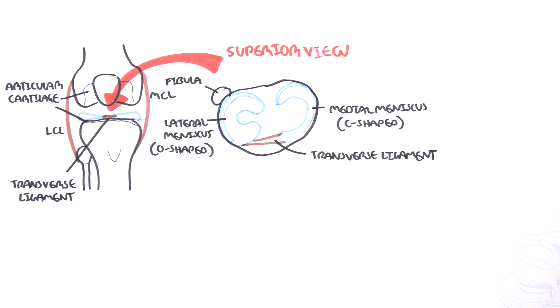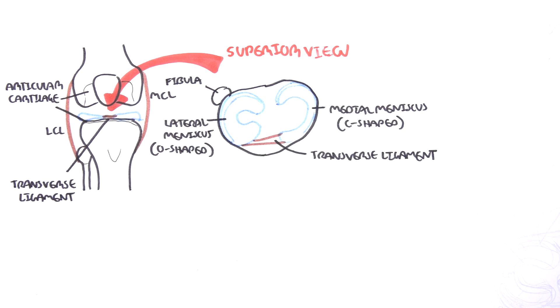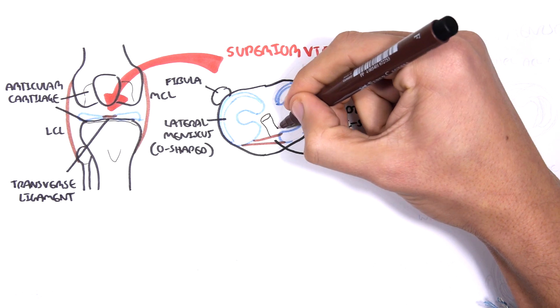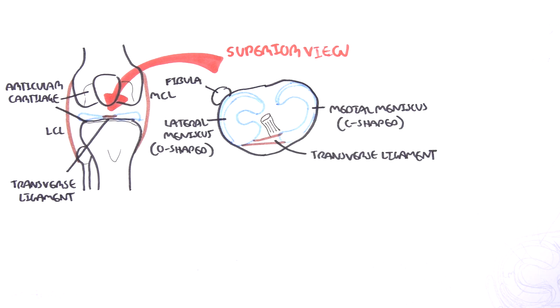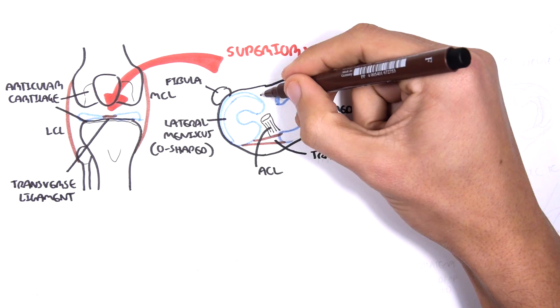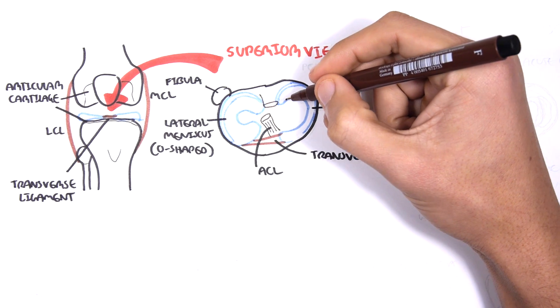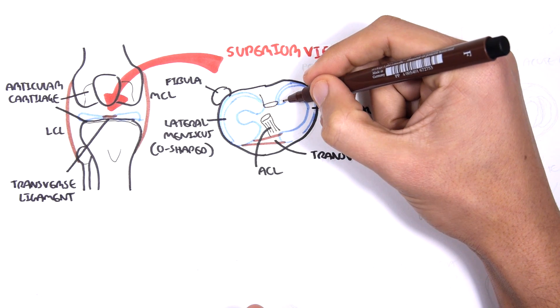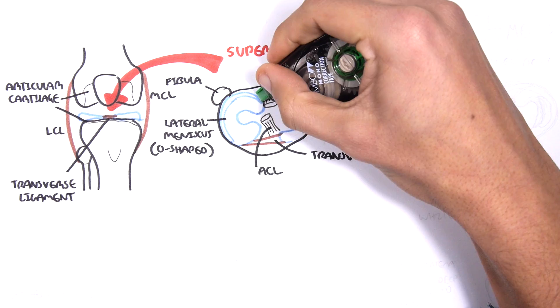There are two other important ligaments inside the knee joint that help stabilize the knee. They are named according to where they attach on the tibial bone. The ACL ligament, or the anterior cruciate ligament, joins to the anterior part of the tibia. And the PCL, the posterior cruciate ligament, joins at the posterior part of the tibia.